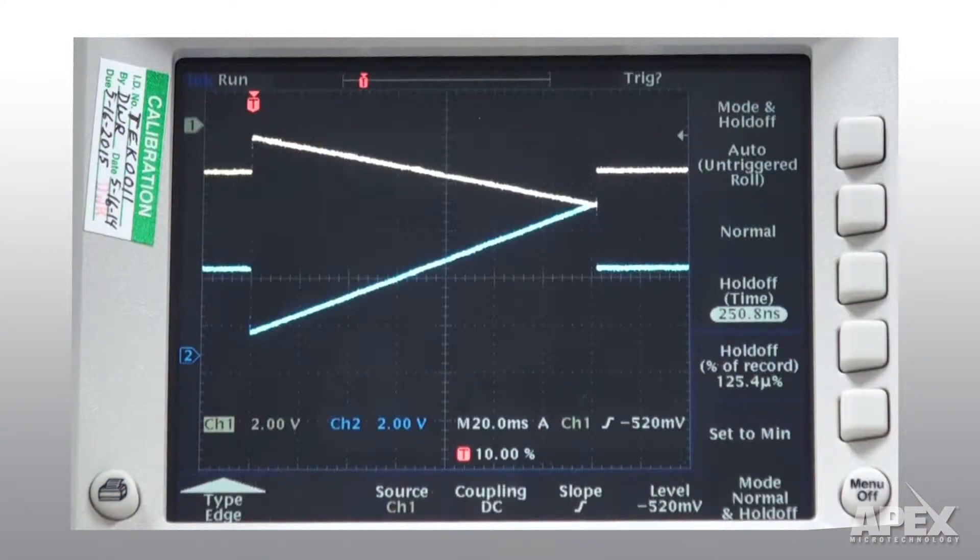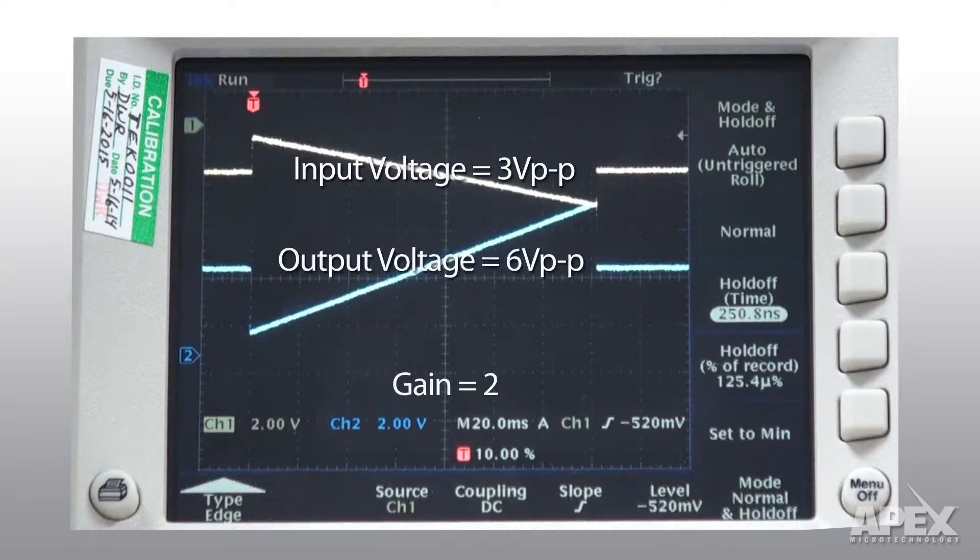Here we see the amplifier operating under normal condition. The yellow line is the input voltage, 3 volts peak-to-peak. And since the gain is set to 2, the output voltage is 6 volts peak-to-peak, represented by the blue line.